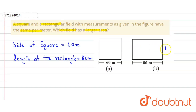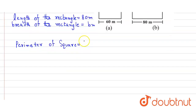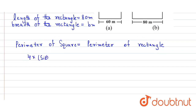Now we first find the breadth, which is B. Let the breadth of the rectangle be B meters. It is given that their perimeters are equal. So the perimeter of the square is equal to the perimeter of the rectangle. The formula for the perimeter of a square is 4 × side, and for a rectangle it is 2 × (length + breadth).